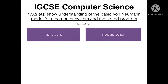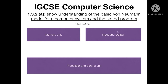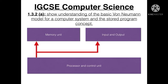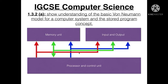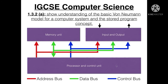This is a basic model of the architecture that von Neumann thought of. We get the memory unit, input and output, the processor and control unit. These are all linked together with wires called buses. The red is the address bus, the green is the data bus, and the blue is the control bus.